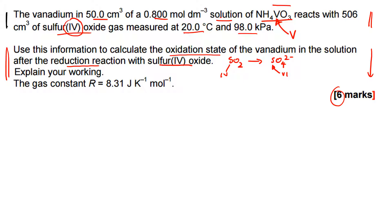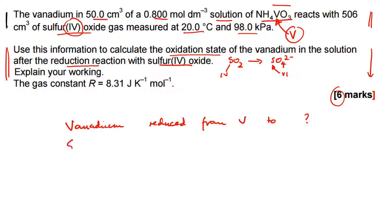By now we know vanadium is being reduced. We know from the data it's been reduced from +5 to some lower state — that is the exam question we're being asked. And sulfur has been oxidised from +4 to +6.